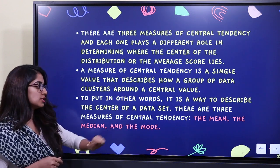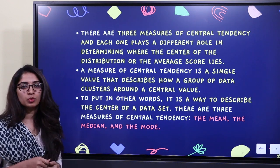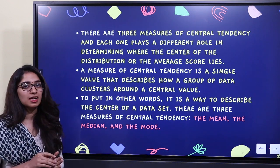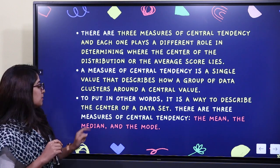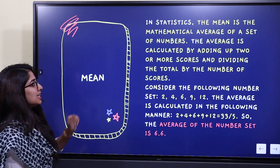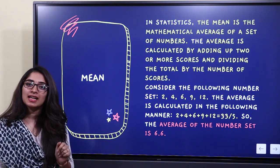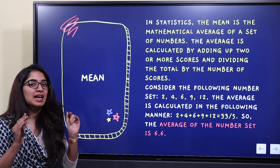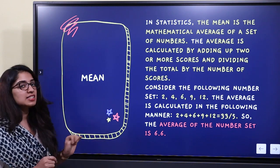What are those three measures? The mean, the median, and the mode. Now, mean is the mathematical average of a set of numbers. Basically, average is mean — we call it average.